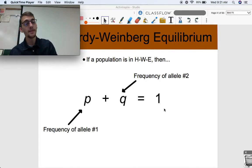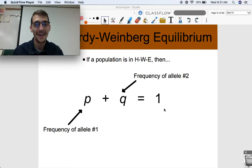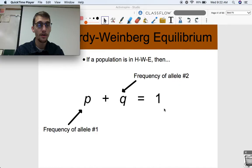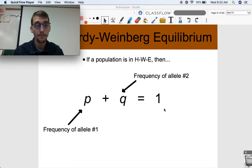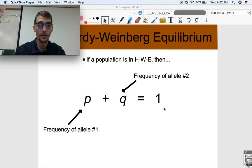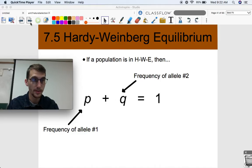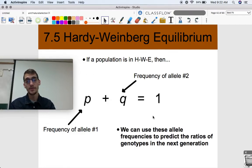This brings us to one of two equations we'll use for Hardy-Weinberg equilibrium: P plus Q equals 1. P represents the frequency of one allele and Q represents the frequency of another allele, and together they equal 1. So if P is our dominant allele frequency and Q is our recessive allele frequency, it goes 0.8 plus 0.2 equals 1. That's how we verify we've calculated the right allele frequencies. You can use these allele frequencies to predict the ratios of genotypes in the next generation.